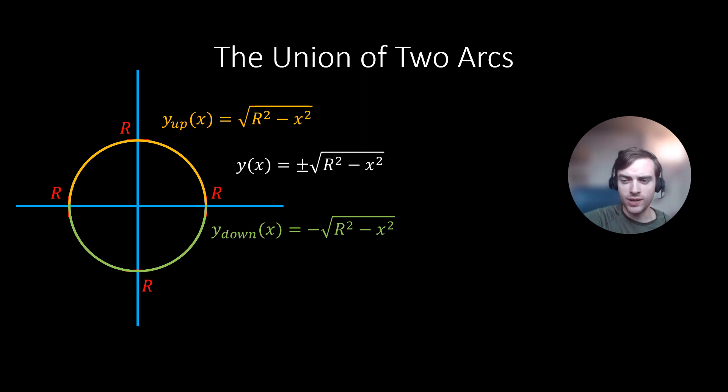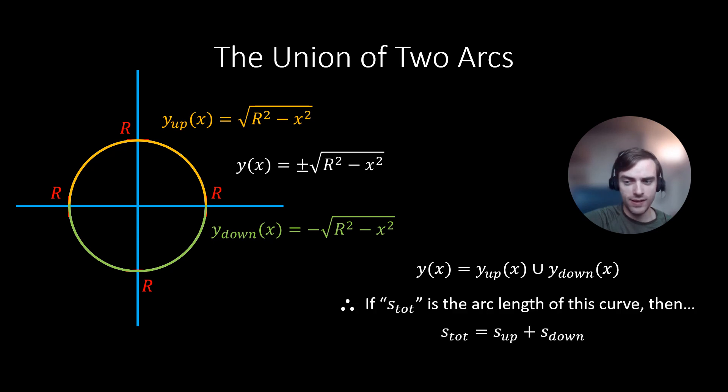Thus the set of all y is the union of y_up and y_down. Therefore, we can say that if s_tot is the arc length or circumference of our circle, then the total arc length of the circle is the sum of the arc length of the top section of the circle and the arc length of the bottom section of this circle.